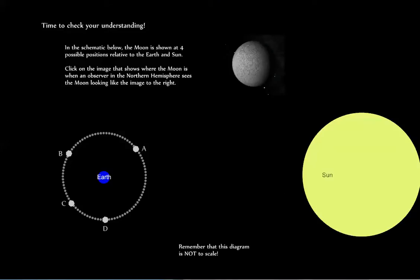Now it's time to check your understanding. In the diagram below, the moon is shown at four possible positions relative to the Earth and Sun. Click on the image that shows where the moon is when an observer in the Northern Hemisphere sees the moon looking like the image to the right. Remember that we're looking down on the Earth from above the North Pole, and this diagram is not to scale.